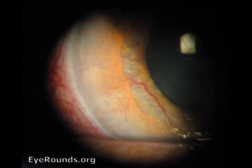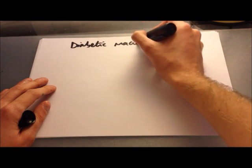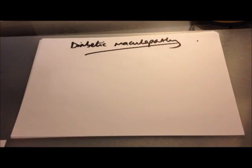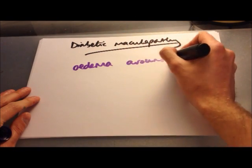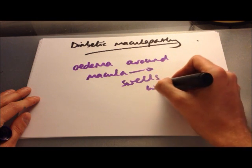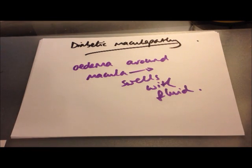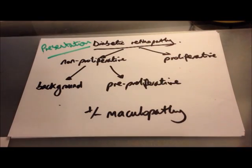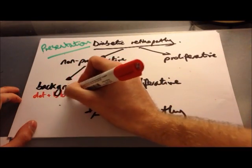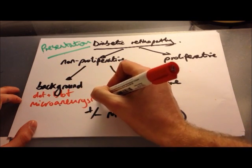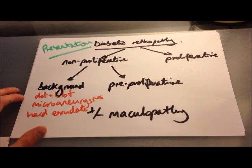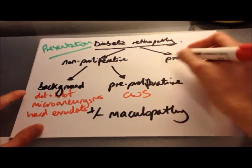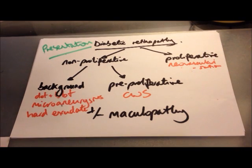A picture of rubeosis iridis shows blood vessels growing onto the patient's iris. Diabetic maculopathy — classified separately — is what causes much of the vision loss. The macula is the centre of vision, and maculopathy involves oedema around the macula, which swells with fluid and separates from the underlying layers. In terms of presentation, background diabetic retinopathy shows dot and blot haemorrhages, microaneurysms, and hard exudates; pre-proliferative shows cotton wool spots; proliferative shows neovascularisation; and maculopathy shows macular oedema and exudates around the macula.